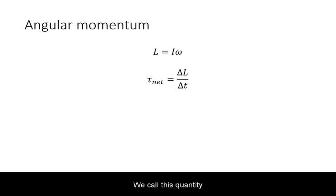We call this quantity angular momentum. It is designated by capital letter L. Hence, Newton's second law in angular quantities can be rewritten as tau net equals delta L over delta t.